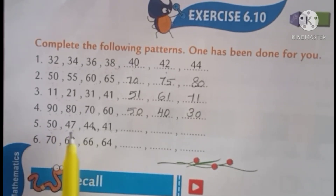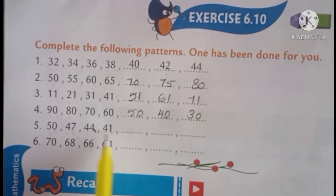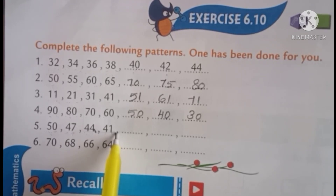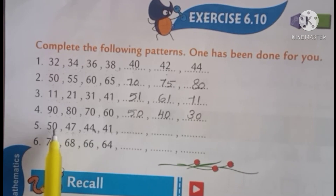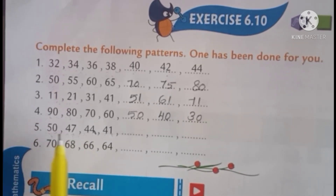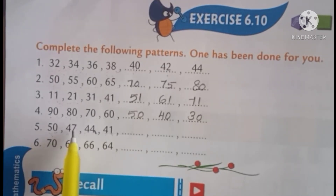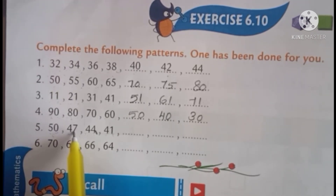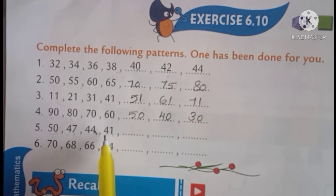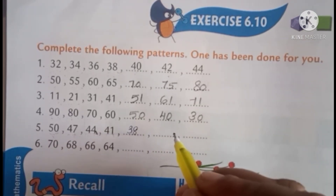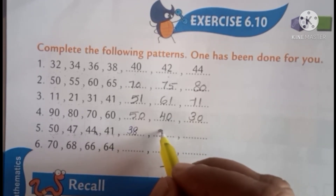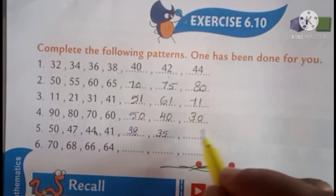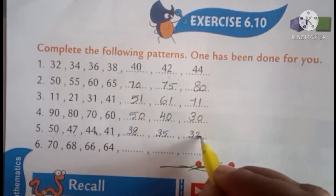Next pattern: 50, 47, 44, 41. Decreasing order. How many times do you get? From 50 to 47 is 3 times, from 47 to 44 is 3 times. So: 50 minus 3 is 47, 47 minus 3 is 44, 44 minus 3 is 41, 41 minus 3 is 38, 38 minus 3 is 35, 35 minus 3 is 32.